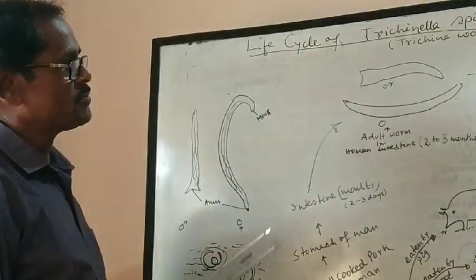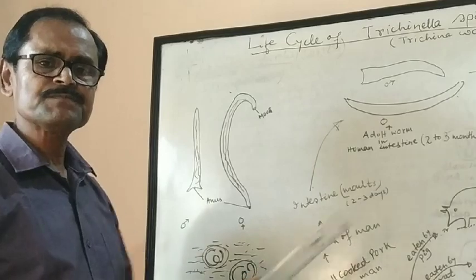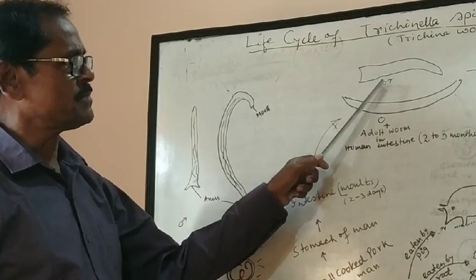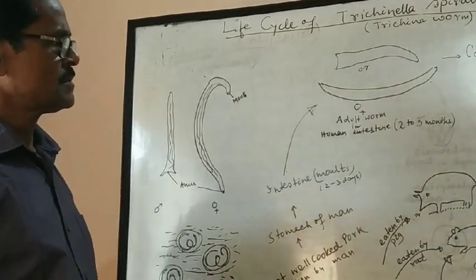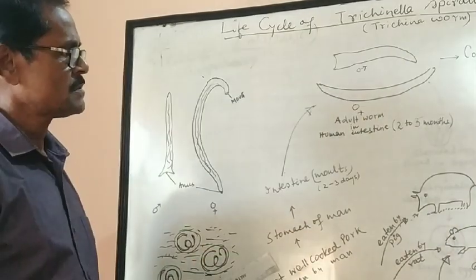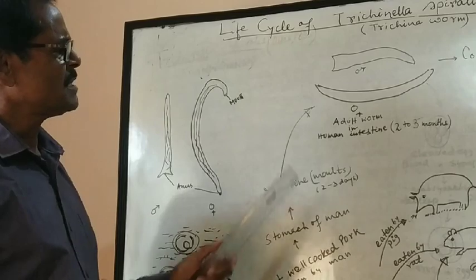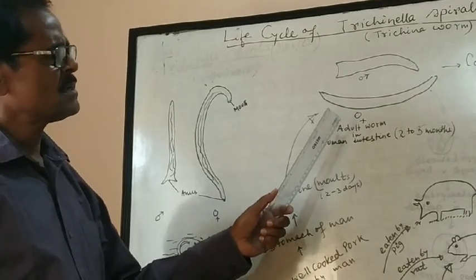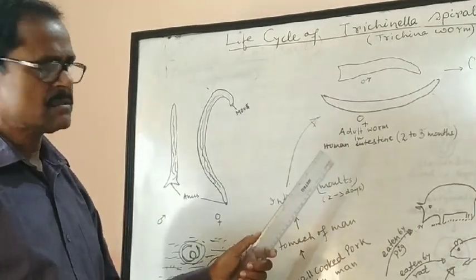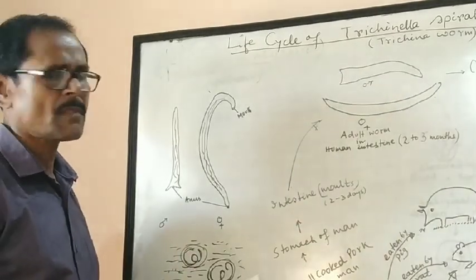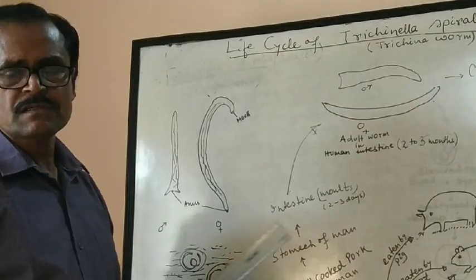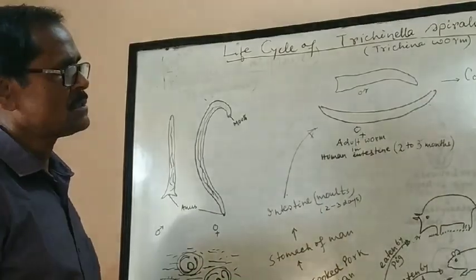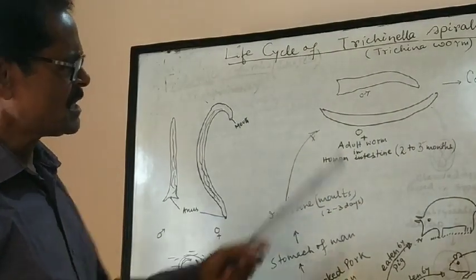Now we will proceed through its description. Here, I have represented the two worms: male and female. Both worms are present in the human intestine where they survive for two to three months. They maintain their life cycle and undergo copulation. After copulation, the male generally dies.